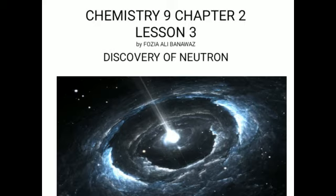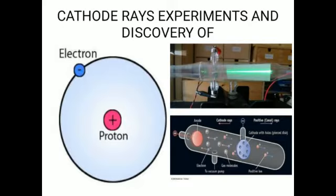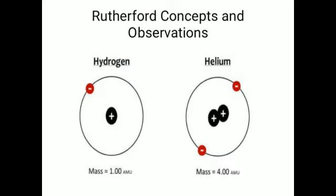In cathode ray experiments, the electron was discovered and understood as a negatively charged particle. The Goldstein experiment discovered the proton, which is comparatively much heavier than the electron. Then Rutherford and other scientists started observing and proposing their assumptions about the comparison of atomic masses. They were very keen to know why masses differed.